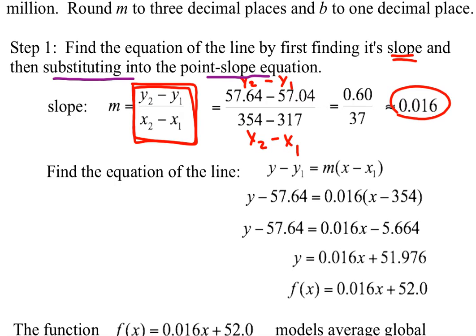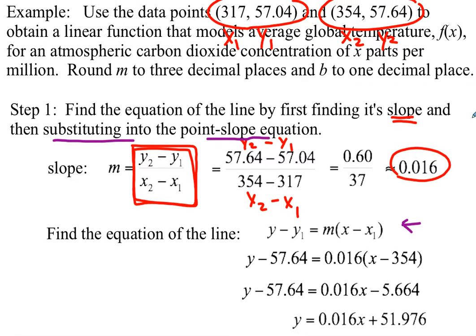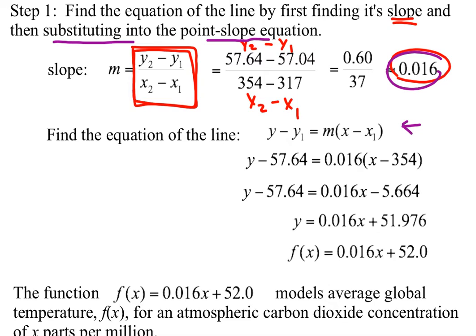So point-slope formula, if you remember, is y minus y sub 1 equals m times the quantity x minus x sub 1. So it doesn't matter which point that you choose. If you choose this first point or the second point, it doesn't matter. You'll still get the same solution. So what we did is we just took this first point, and we substituted it along with our slope.